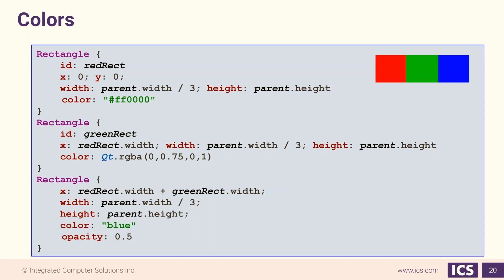We can use an SVG named color, like we do for our blue rectangle. And we can also use the third option, which is a call to Qt.rgba, where we provide red, green, blue, and alpha values between 0 and 1.0. This is exceptionally useful if you want to have some color opacity.